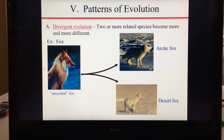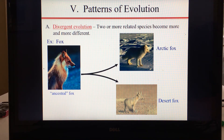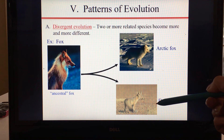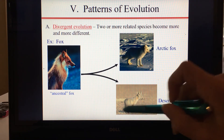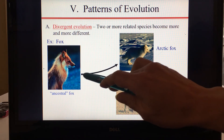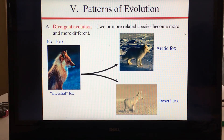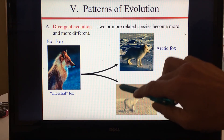Now let's talk about patterns of evolution. The first pattern is divergent evolution, which is when two or more related species become more and more different, often because those populations are adapting to different environments. For example, the arctic fox and the desert fox share an ancestral fox and are now diverging from each other.